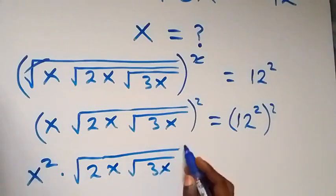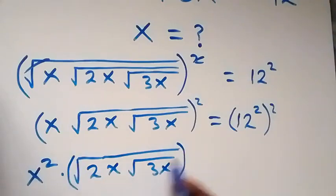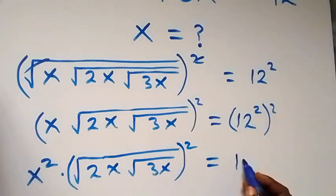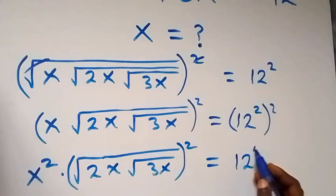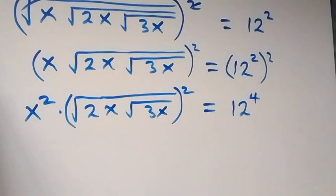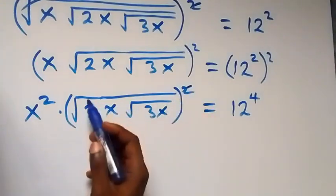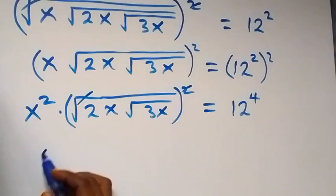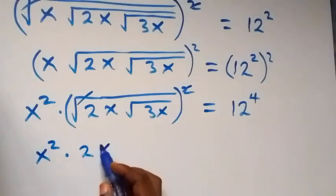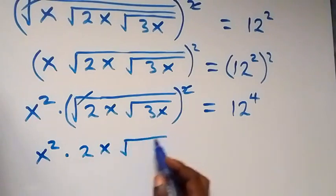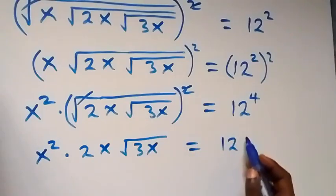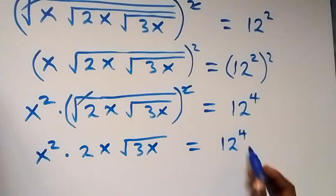So here, squaring this side — the power multiplies — and we have 12 raised to power 4. When we solve further, the square cancels the square roots, and we have x squared times 2x, then times square root of 3x, now equals 12 raised to power 4.